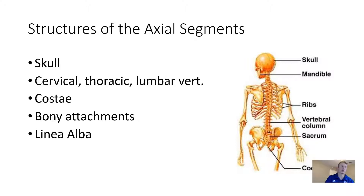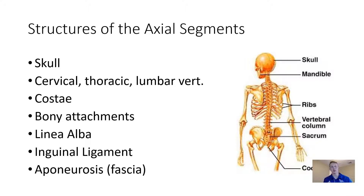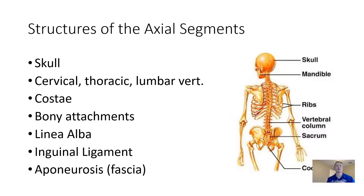We'll talk about each of these, including individual pieces of fascia like the linea alba and the inguinal ligament, and how these connective tissues move across the body and work as origin and insertion sites for some of the lumbar muscles. There's a lot of connective tissue that pulls and moves things around because we have so many degrees of freedom with our axial segments.